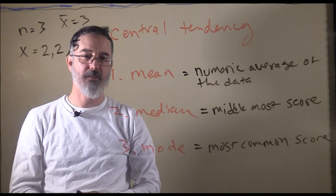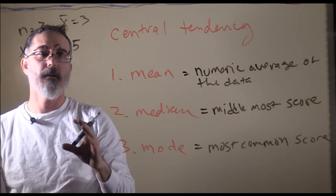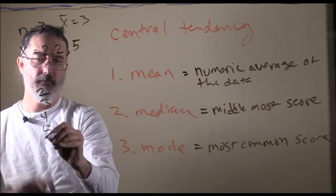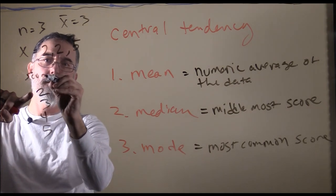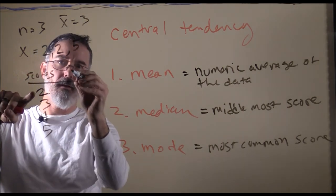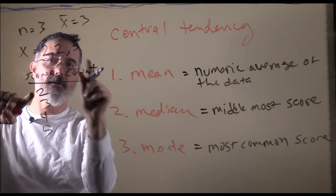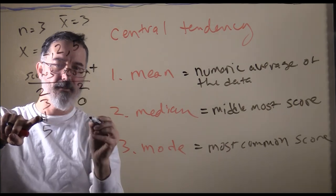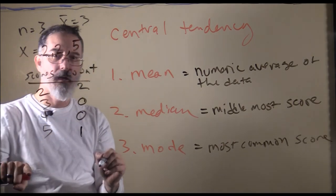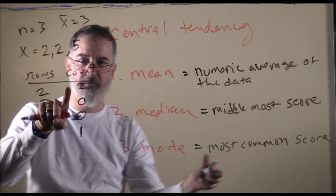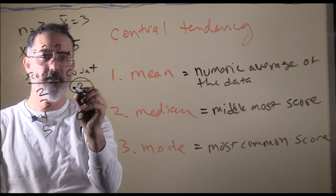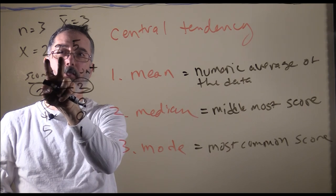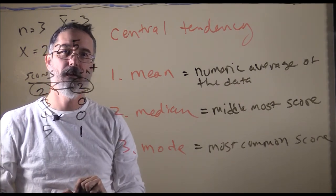The last measure of central tendency is the mode — the most common score. With scores of 2, 2, and 5: there are two 2s, zero 3s, zero 4s, and one 5. Going down the count, the most common score has the highest count. In this case, 2 has the highest count, so the mode is 2.